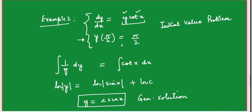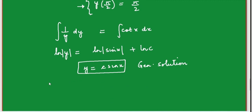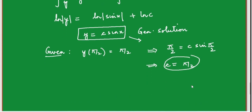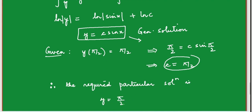The condition given is y(π/2) = π/2. Applying this to y = C·sin(x): when x = π/2, y = π/2, so π/2 = C·sin(π/2) = C·1, giving C = π/2. Therefore the particular solution satisfying this initial condition is y = (π/2)·sin(x). Please keep in mind that whenever you solve a differential equation, the general solution is not a single solution.